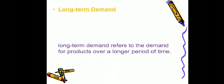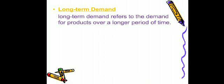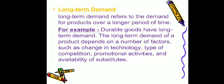Next is long-term demand. Long-term demand refers to the demand for products over a longer period of time — it is the demand you plan for keeping a long period in mind. For example, durable goods have long-term demand as they last a long time. The long-term demand of a product depends on many factors such as change in technology, type of competition, promotional activities, and availability of substitutes.